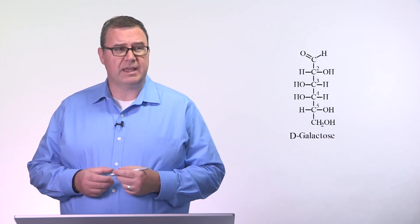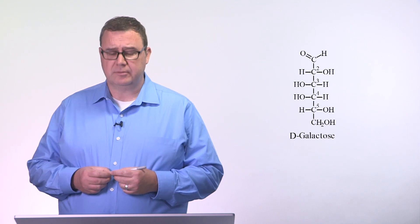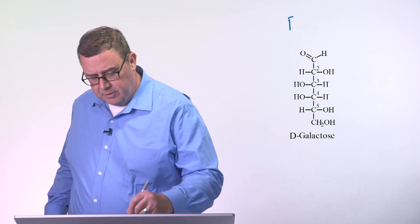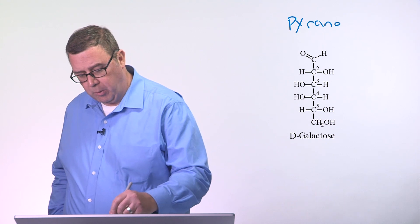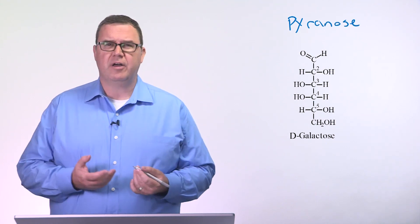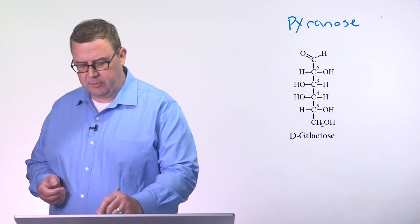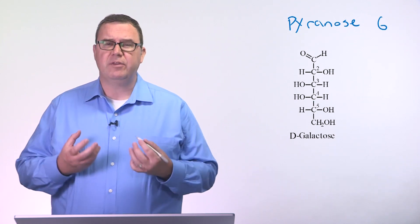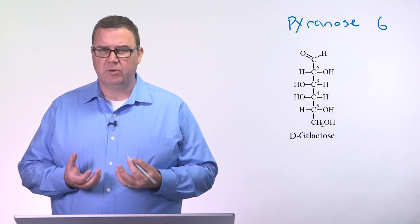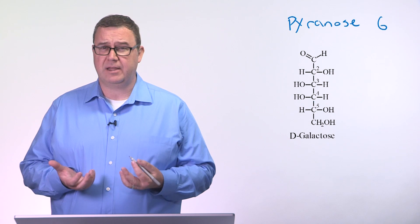Shown here again is D-galactose. We know that this is a pyranose. Please recall that a pyranose is a six-membered ring. If this ring is going to have six members in it, we know that one of those members has to be an oxygen.